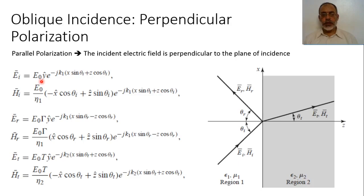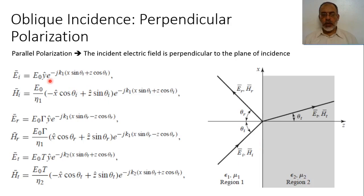As in the case of parallel polarization, the propagation vector is decomposed into KX and KZ components, where KX equals K1 sine theta incident and KZ equals K1 cosine theta incident. So the incident propagation wave function would be E to the power minus jK1 multiplied by X sine theta incident plus Z cosine theta incident.